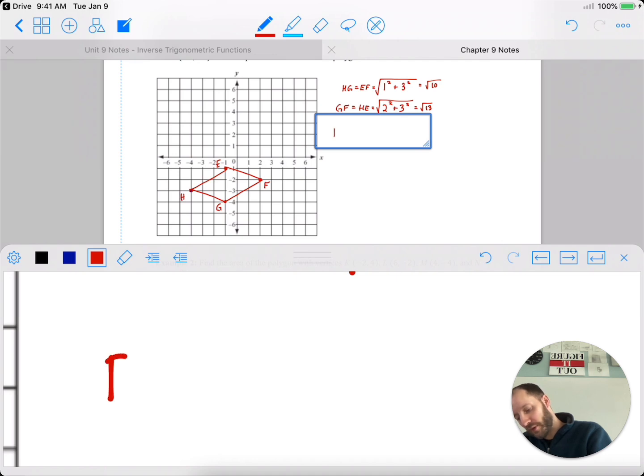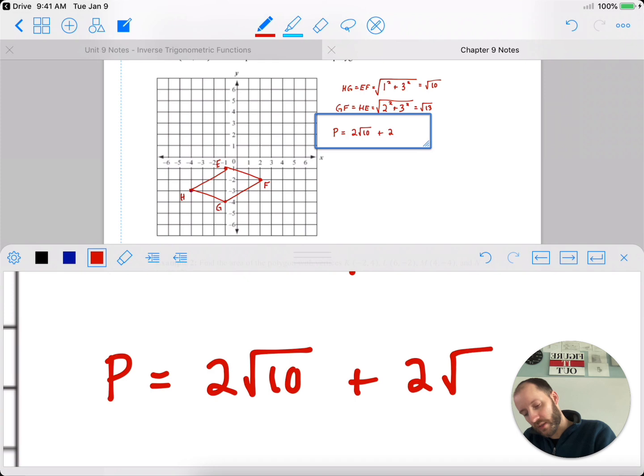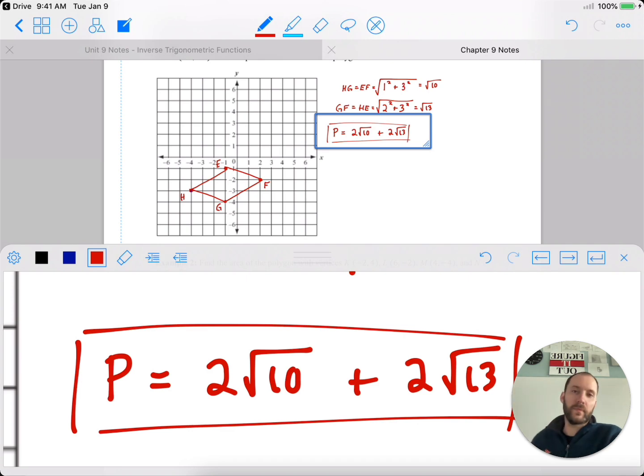So the perimeter is 2 of the root 10s, 2 times root 10, and 2 of the root 13s. Alright, pretty straightforward.